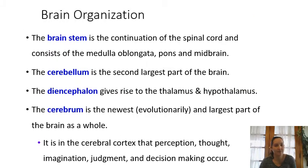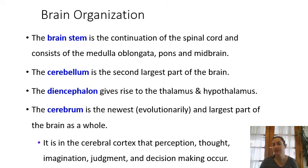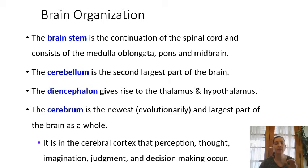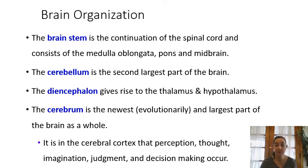As far as the organization of the brain, we're going to divide it into a few different parts. Starting with the brainstem — the brainstem is kind of an enlargement of the spinal cord. As the spinal cord ascends up through the foramen magnum in the occipital bone and into the brain case, we hit the brainstem. The brainstem consists of three parts: the medulla oblongata, the pons, and the midbrain.